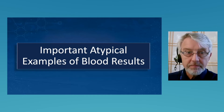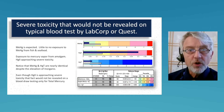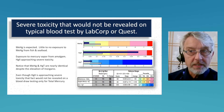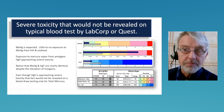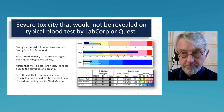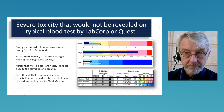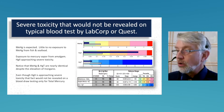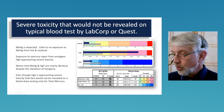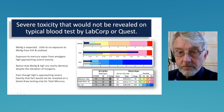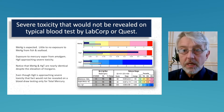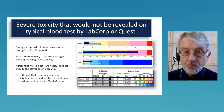Here's an important atypical example — a severe toxicity that would not be revealed on a typical blood test from LabCorp or Quest, or even from a Quicksilver blood metals panel, because all those panels test total mercury only. If you performed that blood test and looked only at the total mercury, it would look excellent. But it's obvious in this example that inorganic mercury is a moderate to severe toxicity — something you would miss without speciation.